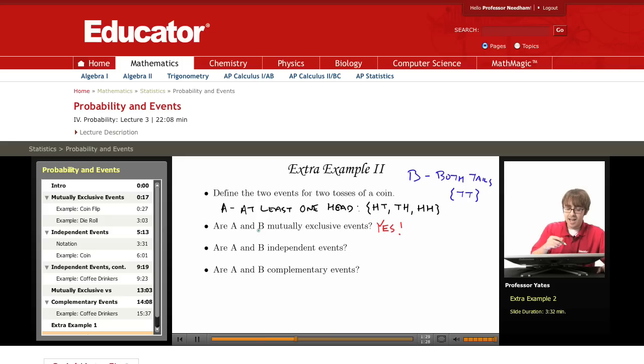Because I know A and B are mutually exclusive events, we know when talking about mutually exclusive events versus independent events, mutually exclusive events are not independent events. So automatically, because the first question is yes, I know they are dependent events, not independent events.